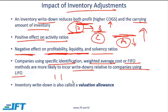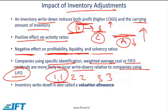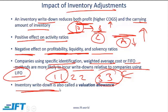With LIFO, the inventory value is relatively low, so the probability of a write-down is low. Companies using FIFO will have inventory valued higher, so there is a higher chance of write-downs. This inventory write-down is called a valuation allowance — a contra account that reduces the value of an asset, just as depreciation reduces the value of long-lived assets. Similarly, the inventory valuation allowance reduces the value of inventory on the balance sheet.